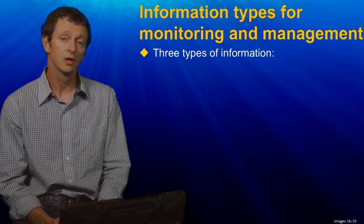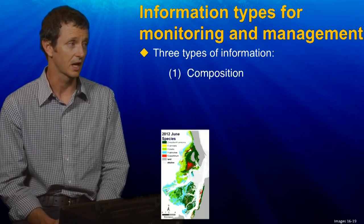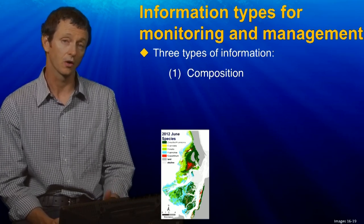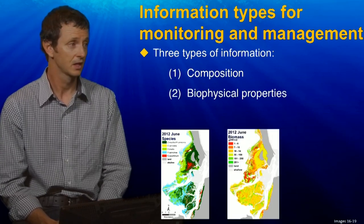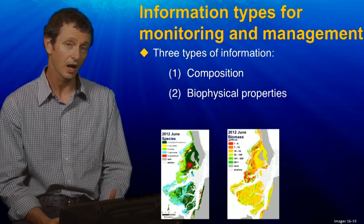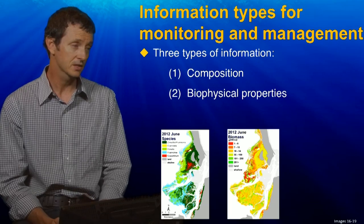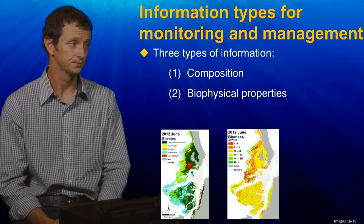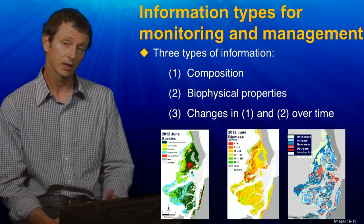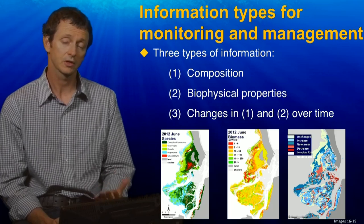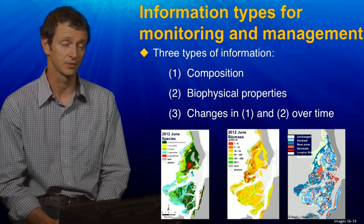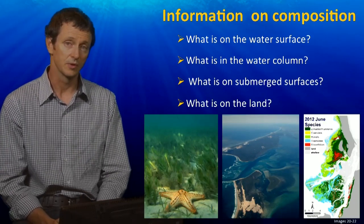There are three types of information we can collect from remotely sensed data. First, composition — what's actually on the water surface or benthos: is it coral, seagrass, and what type of seagrass? Second, biophysical properties — in the case of seagrass, this could be the amount of cover, its biomass, or the amount of photosynthesis occurring. Third, if we collect that imagery and produce maps over time, we can look at changes in composition and changes in biomass over time to understand how the environment is changing.